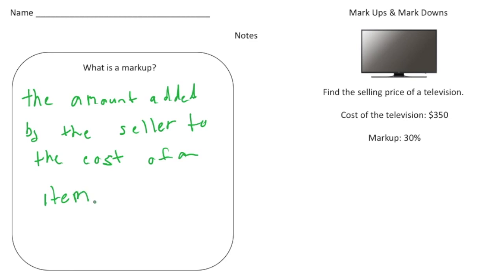An example of a markup would be if you wanted to buy a television. Say you go into Walmart or Best Buy and you notice that the television costs $500. Well most likely Best Buy didn't pay $500 for that TV — they probably paid $300. What they do is add a certain percentage to the price so they make a profit.